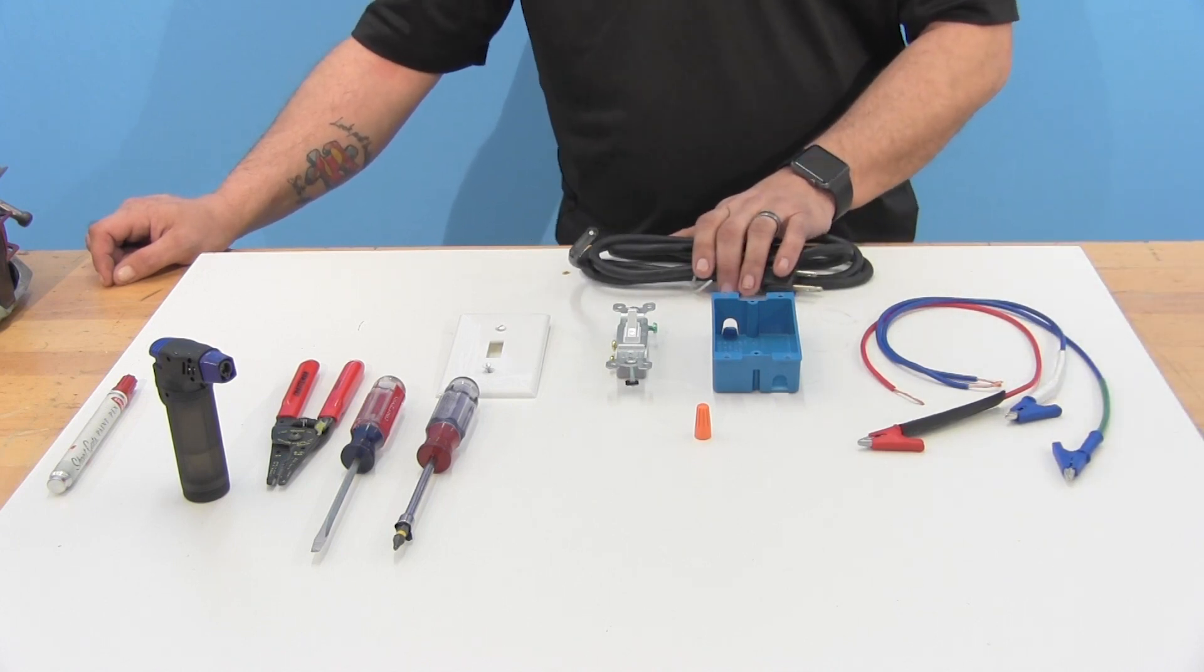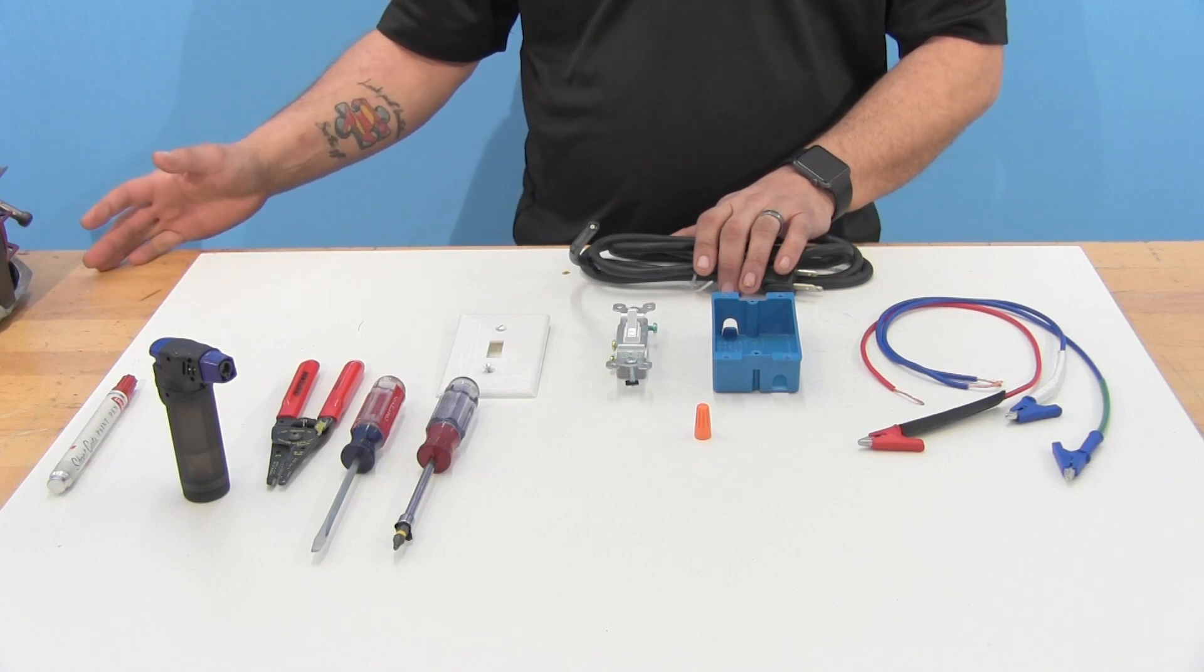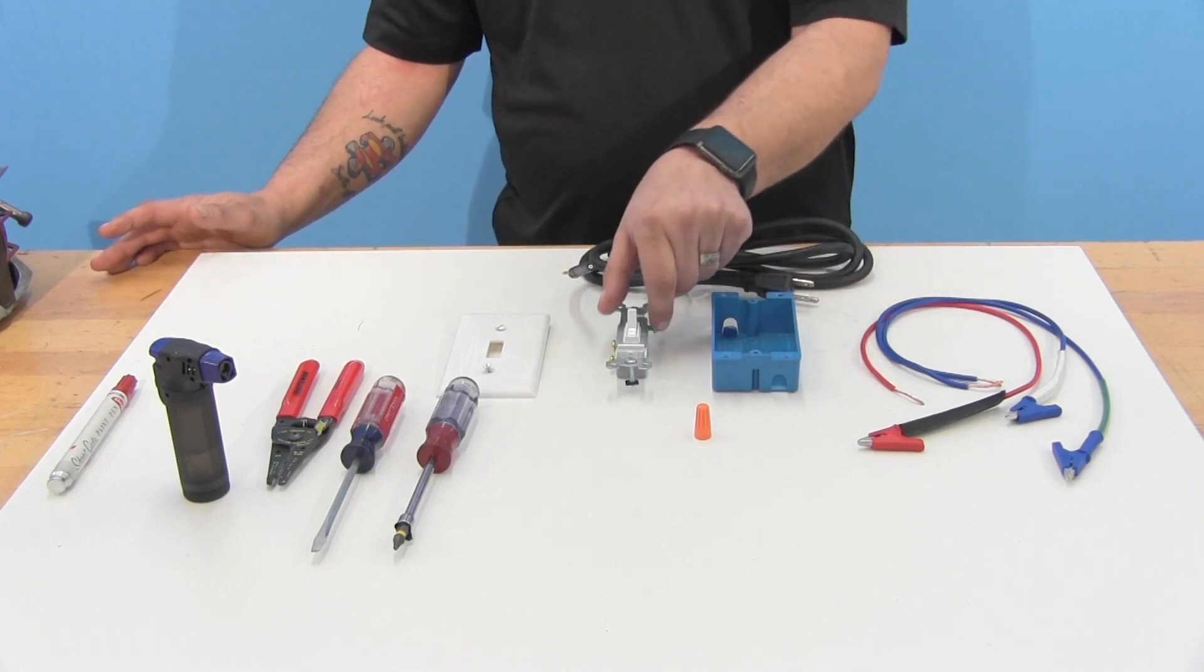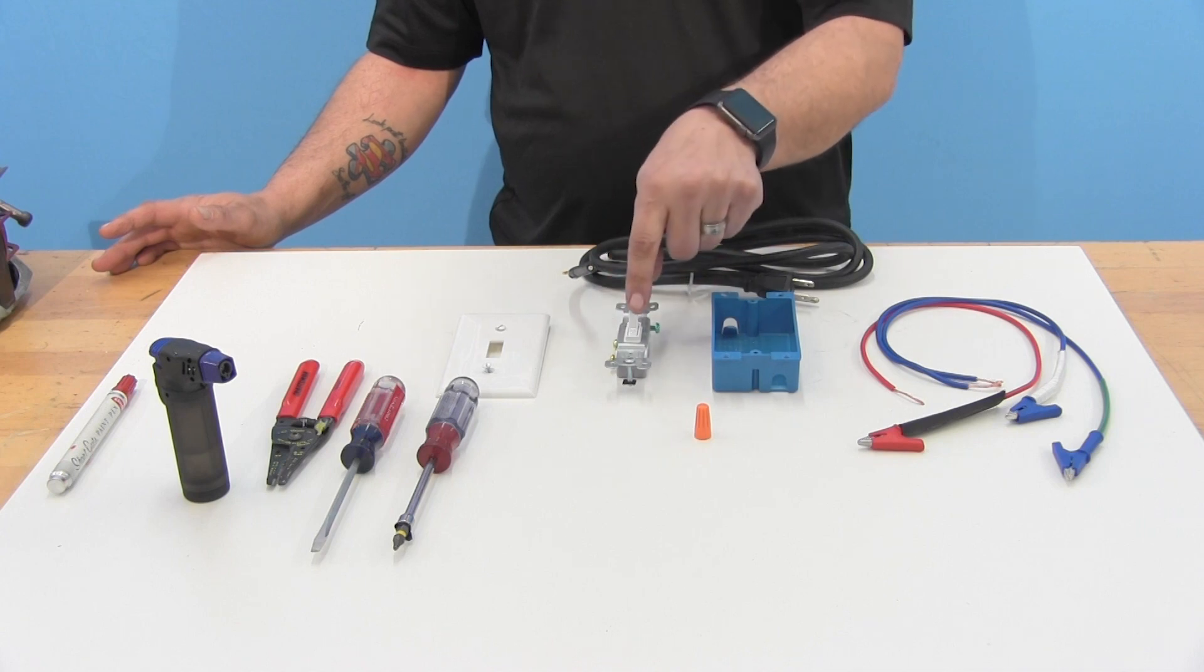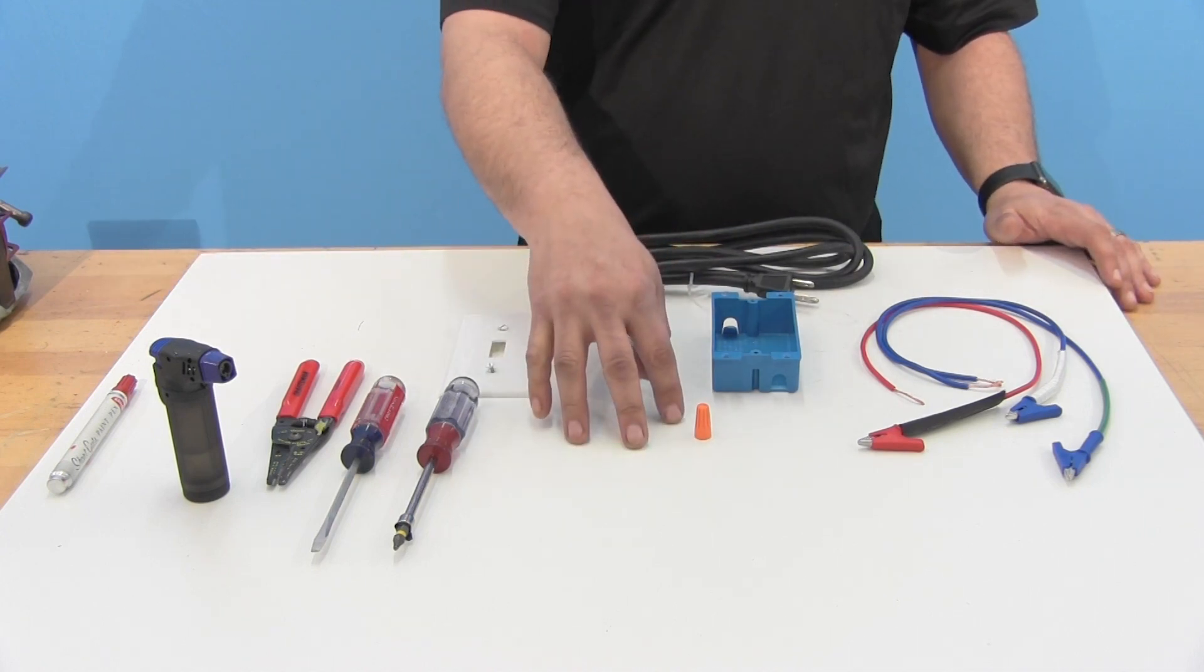We also need a 120 volt three wire power supply, a shallow switch box, a single pole single throw light switch, a switch cover, and one wire nut.